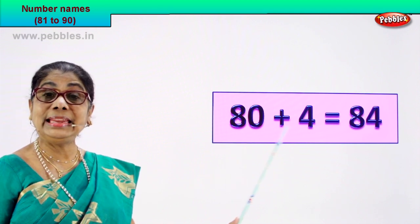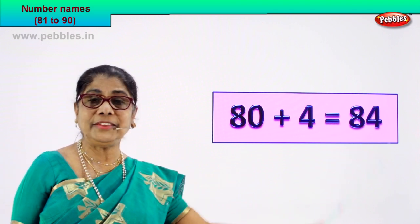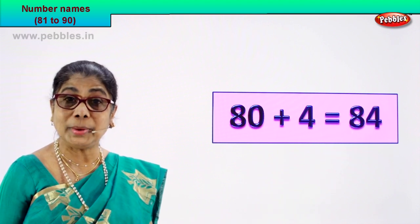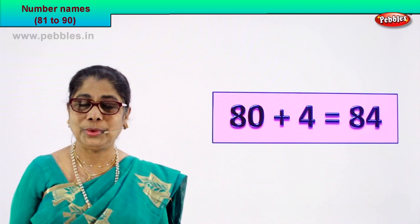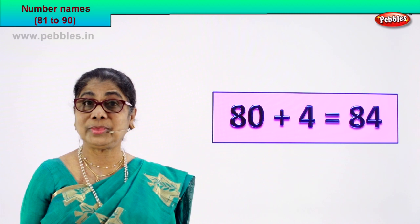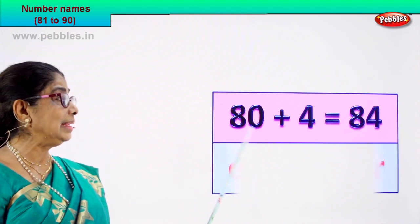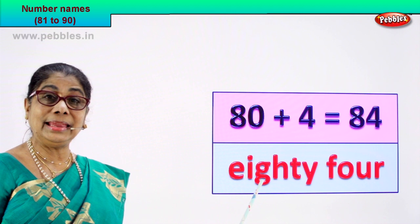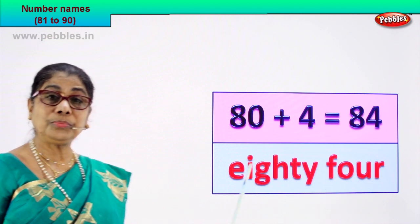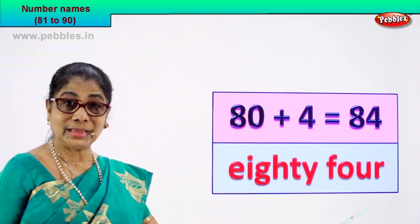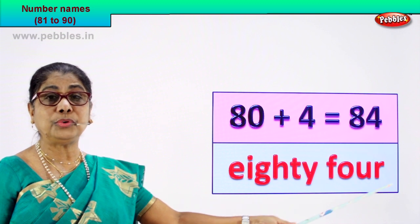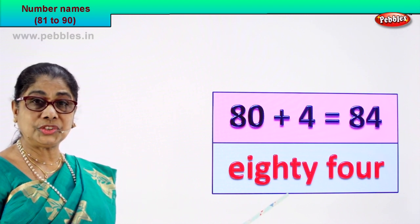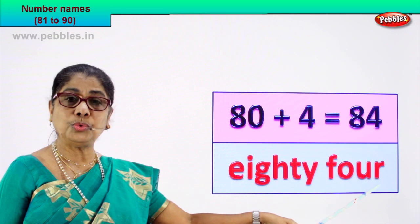Look — 80 plus 4 is equal to 84. The numeral is 8 and 4, 84. How do we spell and write 84? Eighty — E-I-G-H-T-Y — and four — F-O-U-R. The numeral 84, you write its name as eighty-four.